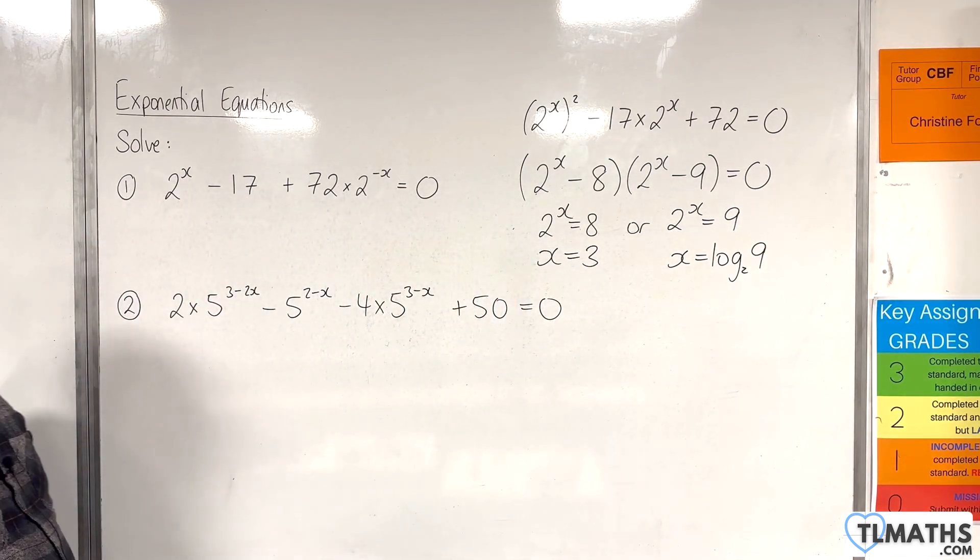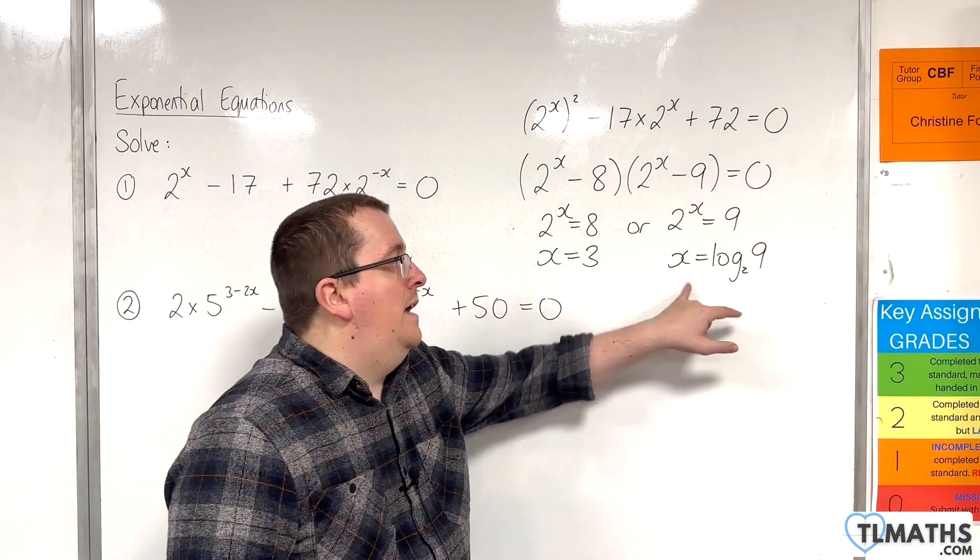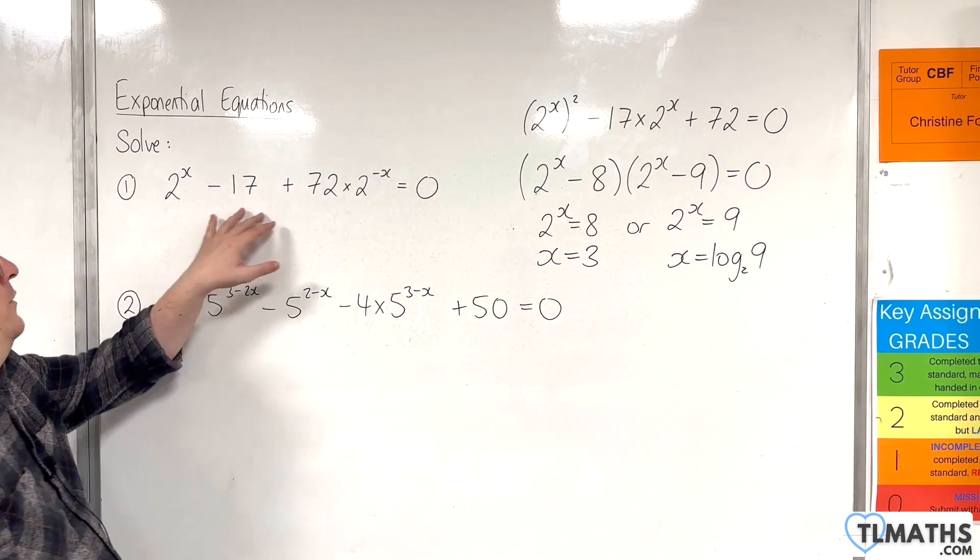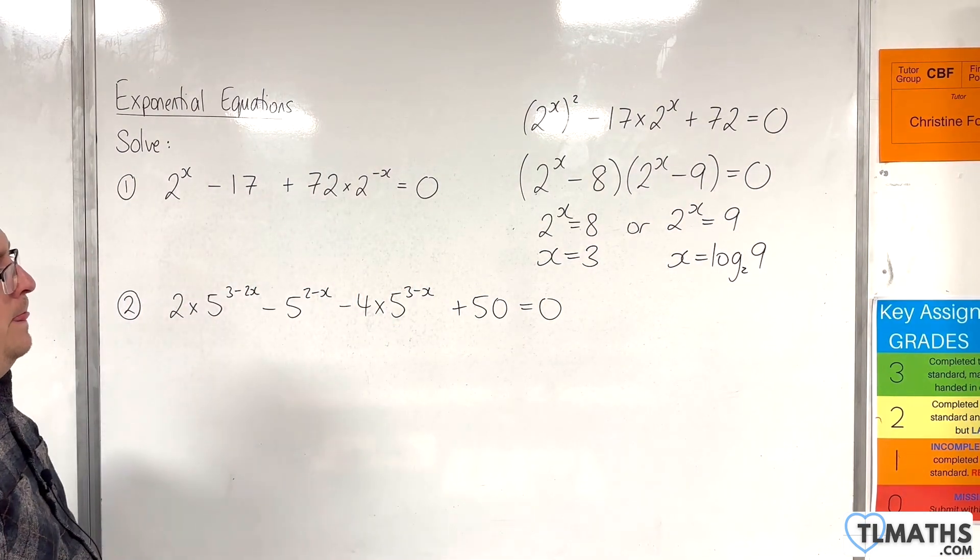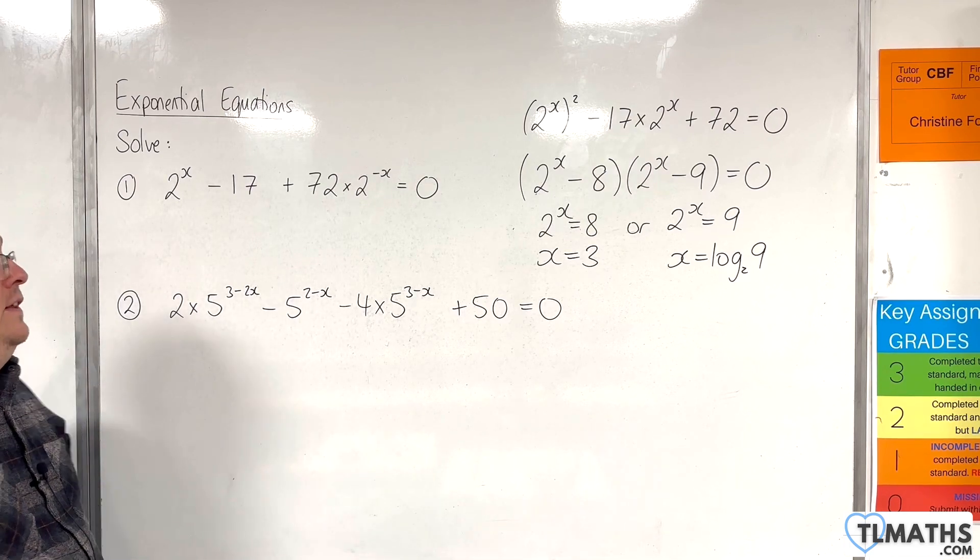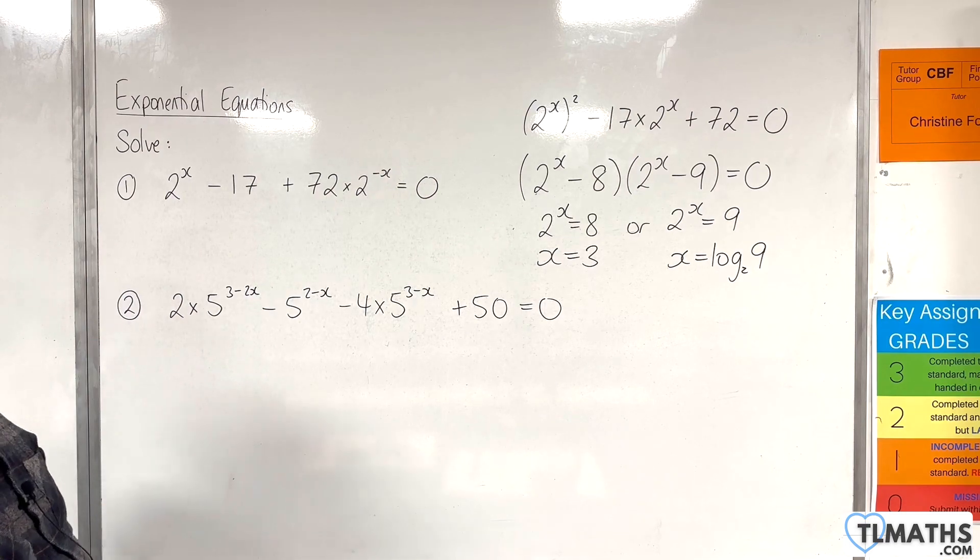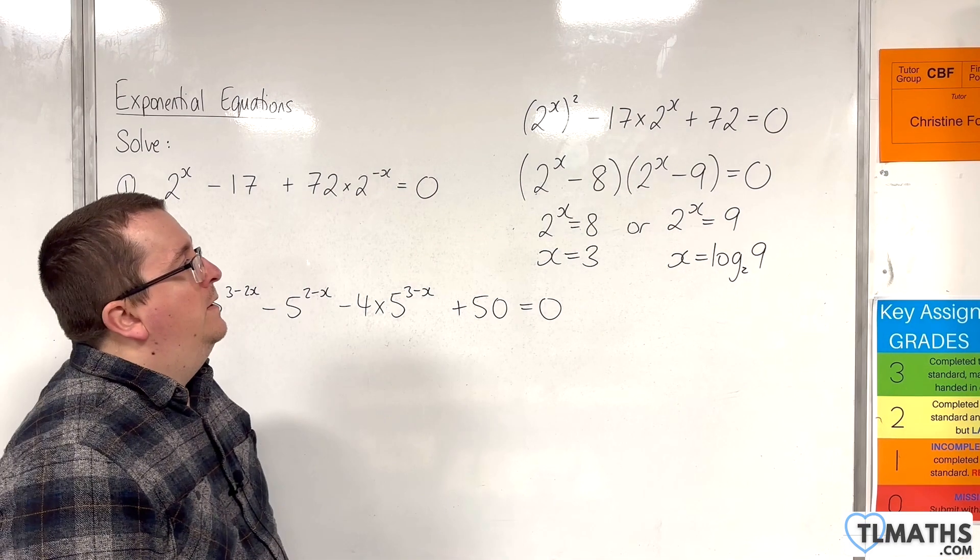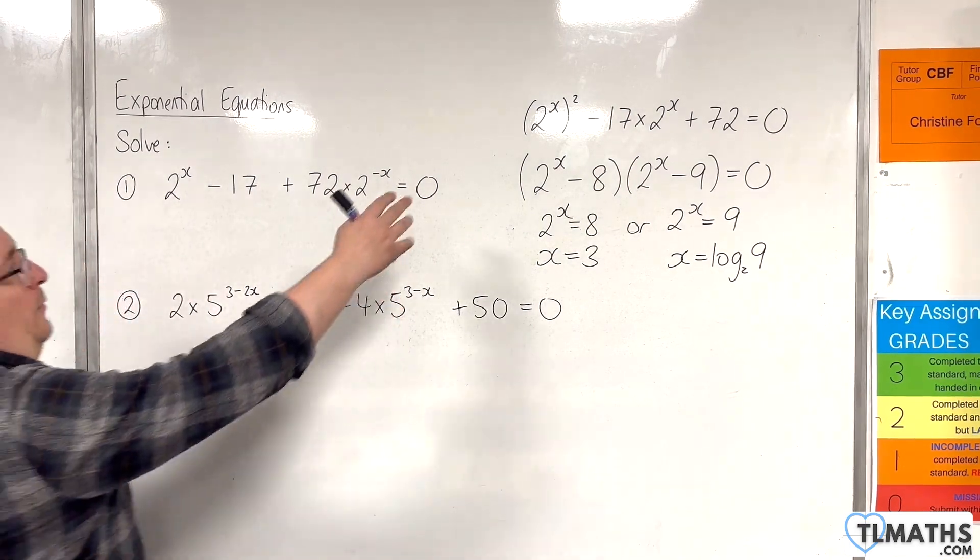And so, they are the solutions to that problem there. OK? So, keep an eye out for multiplying through by 2^x, in this case, that allows us to turn it into the hidden quadratic that we are able to work with.